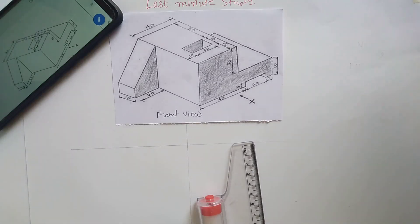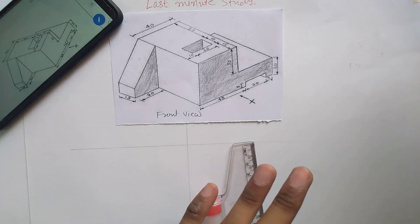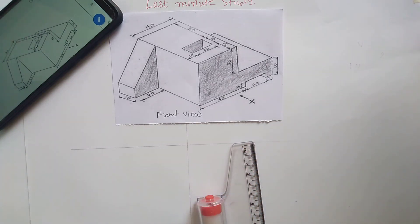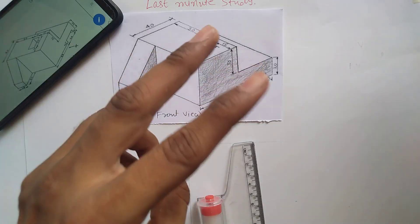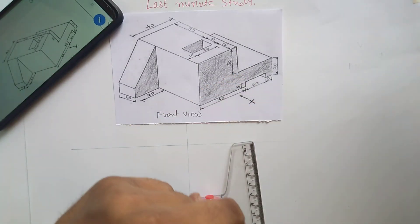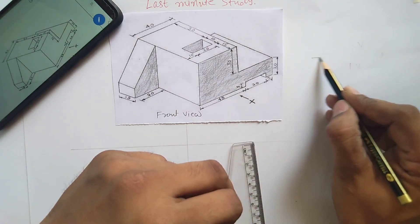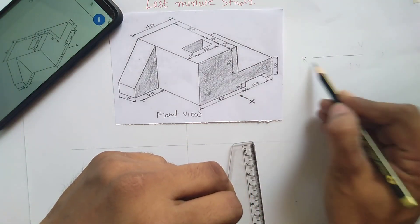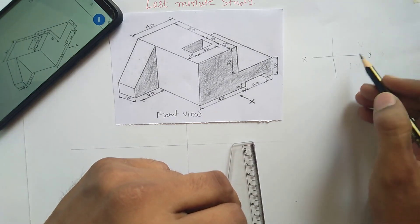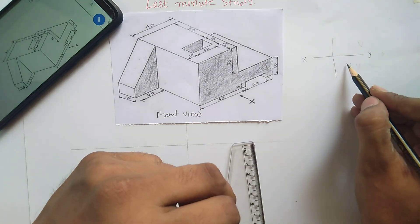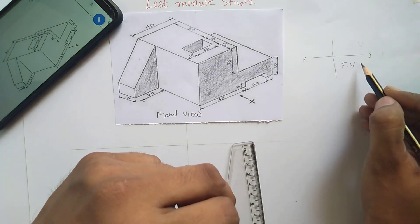Welcome to Last Minute Study with your Professor Buddy. This third problem of orthographic projection method is based on third angle projection method. Previously we have solved two problems based on first angle projection method. In third angle projection method, the position of front view, top view, and side view will be changed. So the front view is below the XY line.